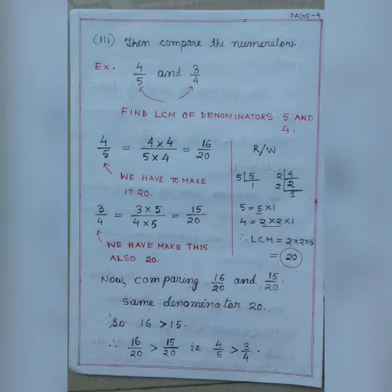We have to find the LCM of the denominators 5 and 4. For 5: 5 equals 5 into 1. For 4: dividing by 2 gives 2, dividing again by 2 gives 1, so 4 equals 2 into 2. Therefore the LCM is 2 into 2 into 5, which equals 20.